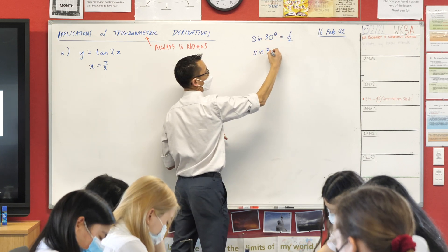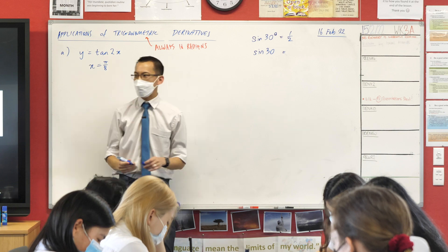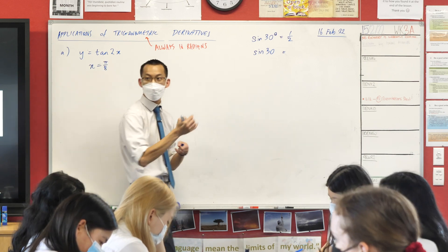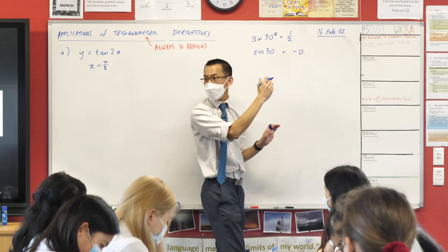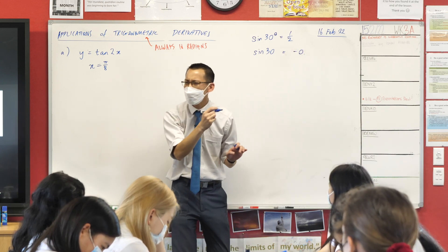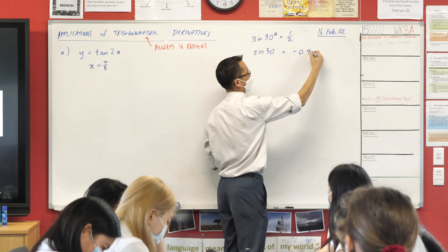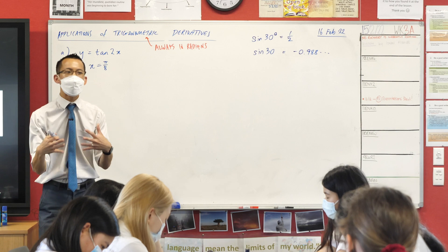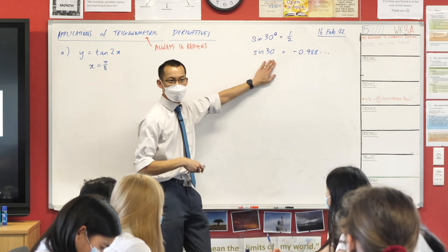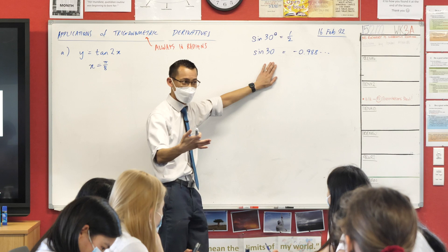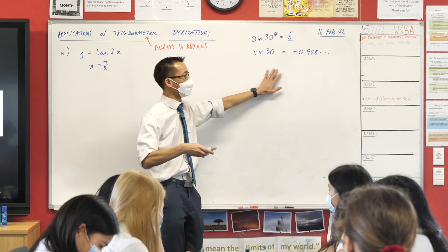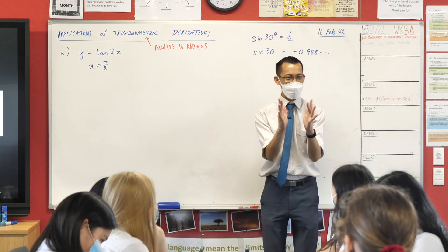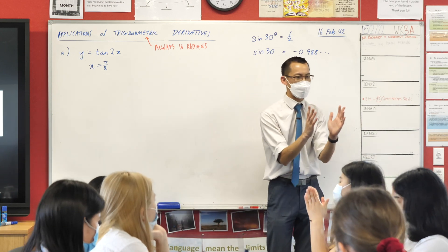However, if you now go ahead, change the mode of your calculator, change it into radians, and then I want you to do exactly the same thing. I want you to type in sine 30. Now it'll give you something weird. I don't know what it's going to give you, can someone tell me? Yeah, negative 0.98889... okay, dot dot dot.